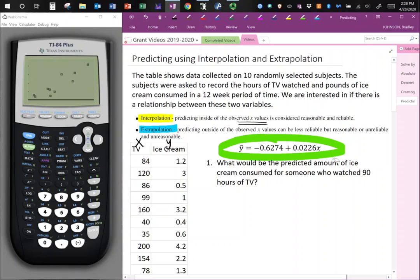So using our equation here, highlighted in green, what would be the predicted amount of ice cream consumed for someone who watched 90 hours of TV?